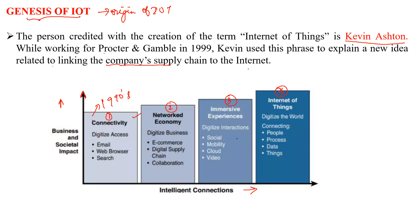The next phase was called the networked economy, in which business was digitized — by means of e-commerce, digital supply chain, and collaborations. The third phase is immersive experience, where person-to-person interactions were digitized, such as social mobility, cloud, and video — mainly the emergence of social media.